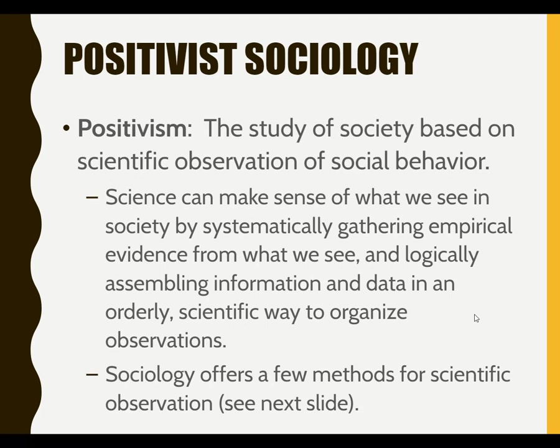Positivist sociology is highly related to structural and functional sociology. It's an early form of sociology where sociologists believed that they could scientifically measure everything in society and be highly accurate about that — so they could make observations and say, from a definitive standpoint, this is what is going on.